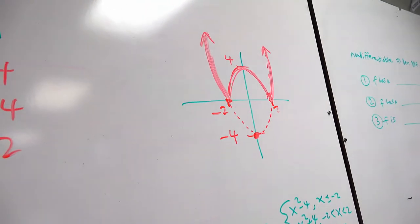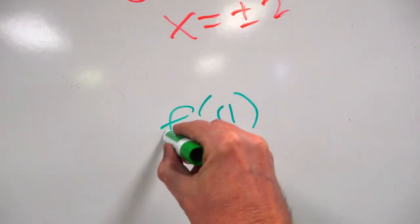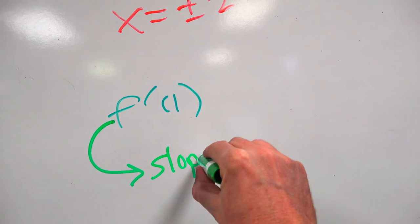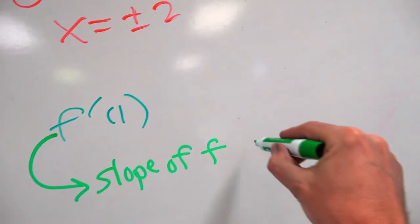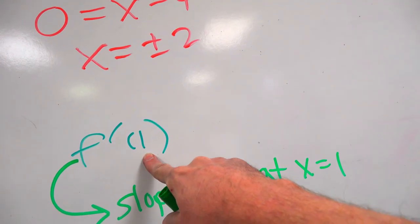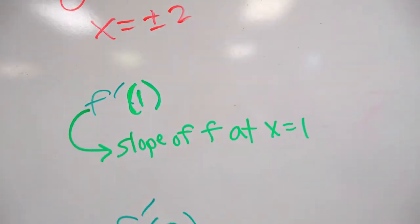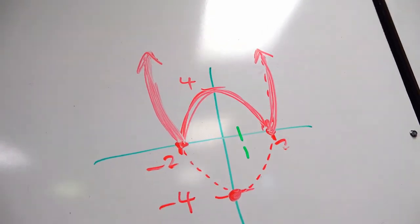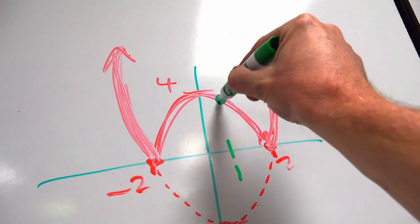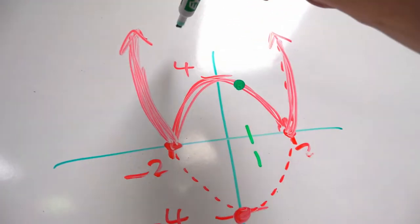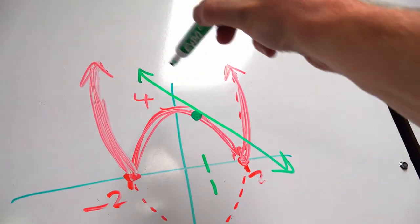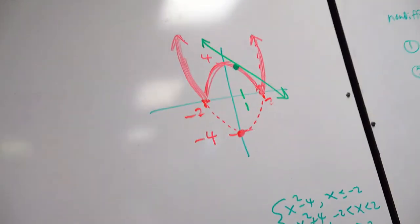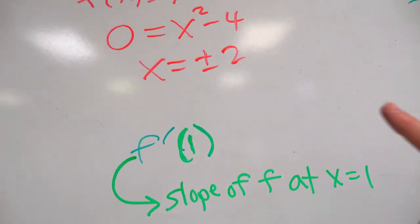F prime of 1 is the first question related to this graph. The translation into English: it's the slope of F, the original function, at X equals 1. You'll notice 1 is on this section right here. If you think about this as a roller coaster, the tangent line is negatively sloped — the roller coaster is dropping past that peak. So the derivative should be negative because the tangent slope is negative and the function is decreasing.